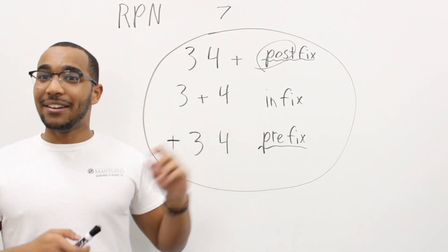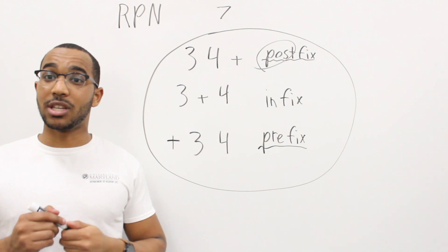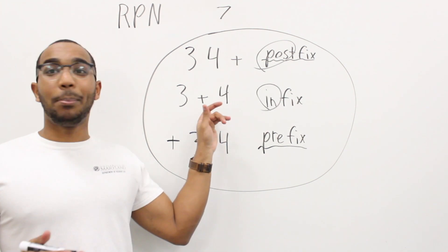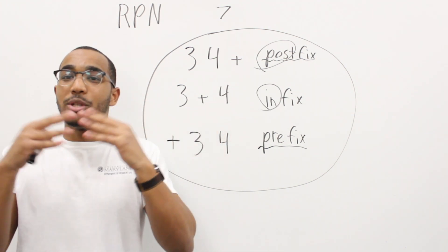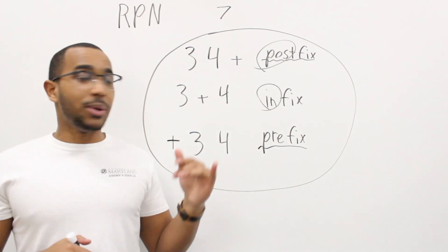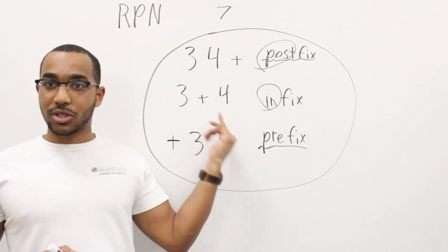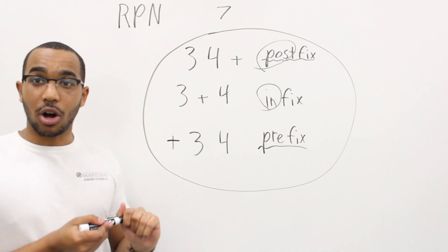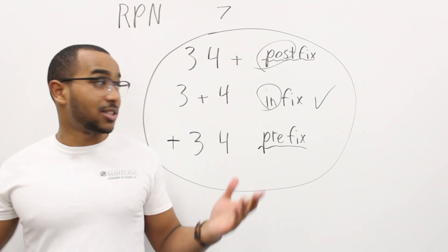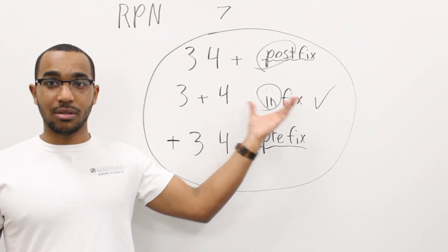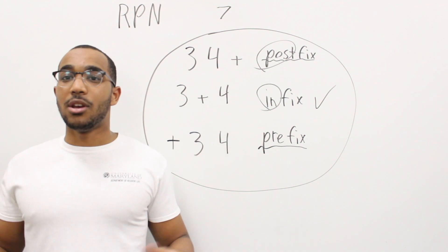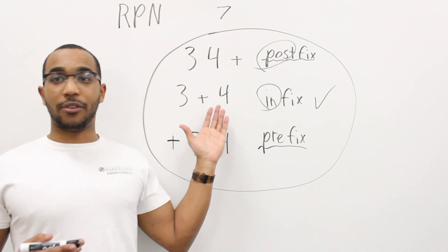So when we have infix notation, the operator is in between the numbers we're operating on. So we would do three plus four — this is what we've used all our lives. Infix is what you use in math; this is the notation you're going to use almost always. So this is what we're familiar with.